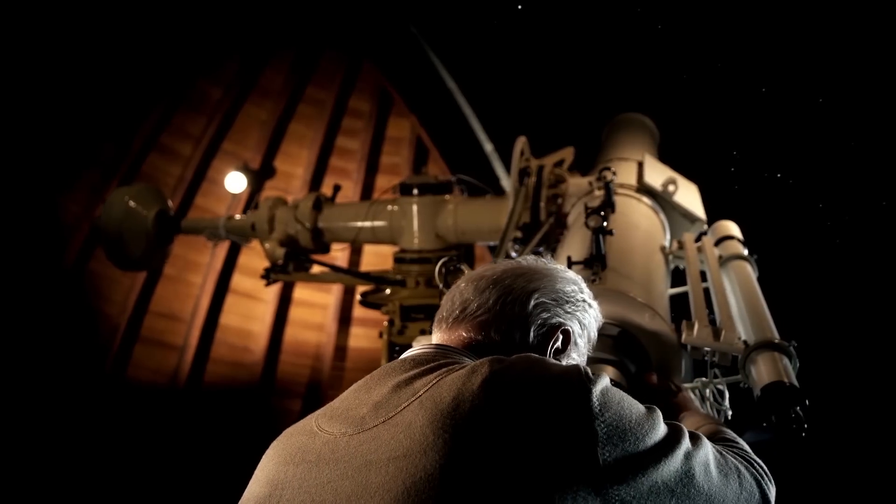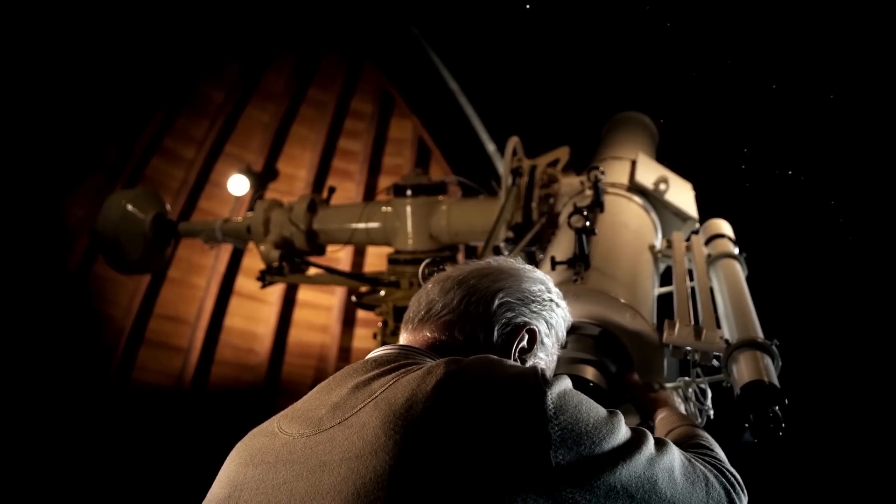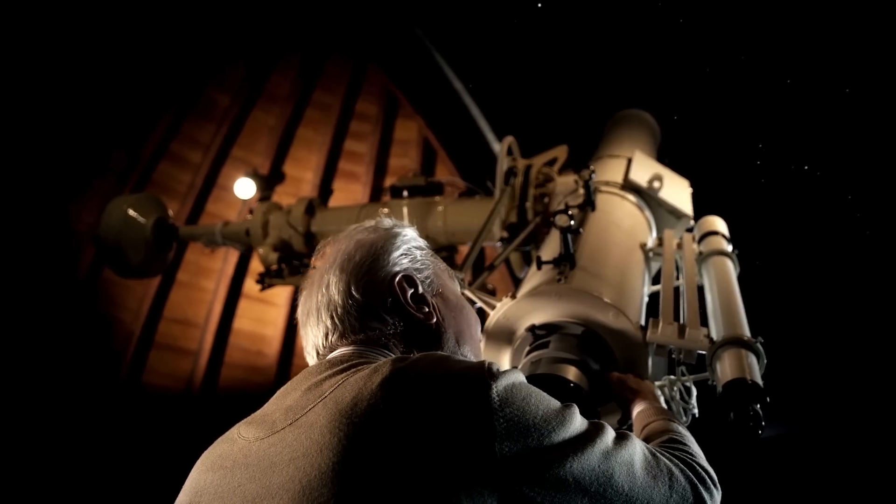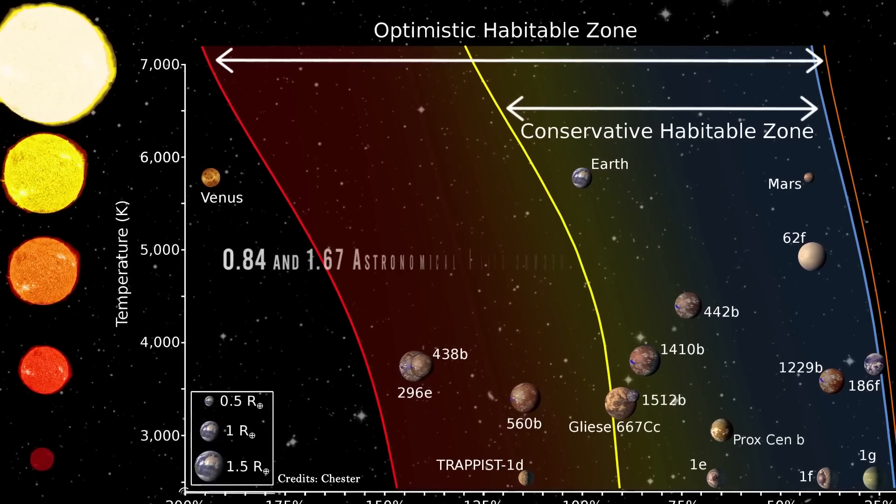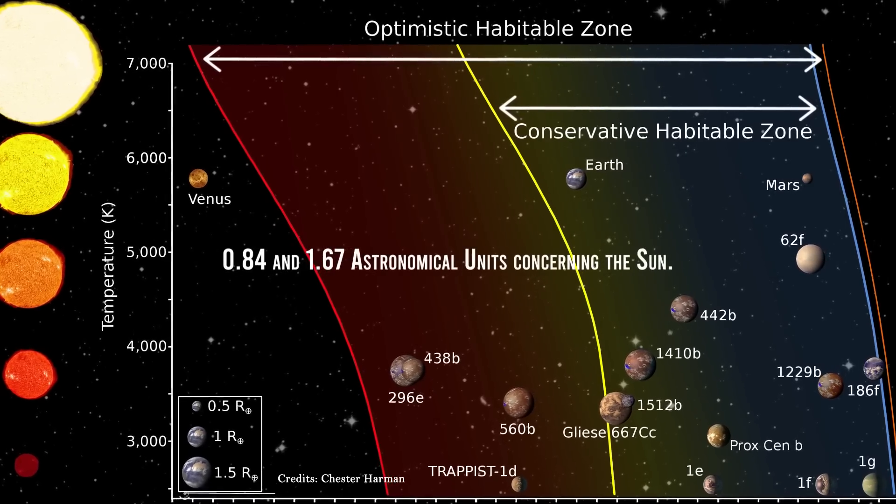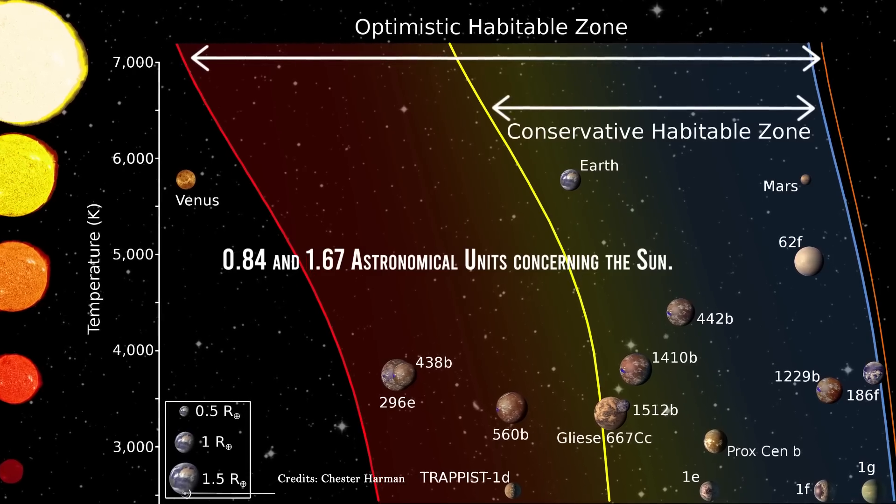Currently, the most anticipated measure by astronomers about the measurements of the habitable zone of our solar system sets its limits at a distance of between 0.84 and 1.67 astronomical units concerning the Sun.